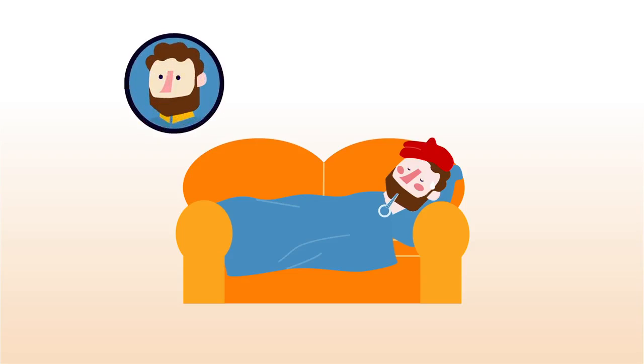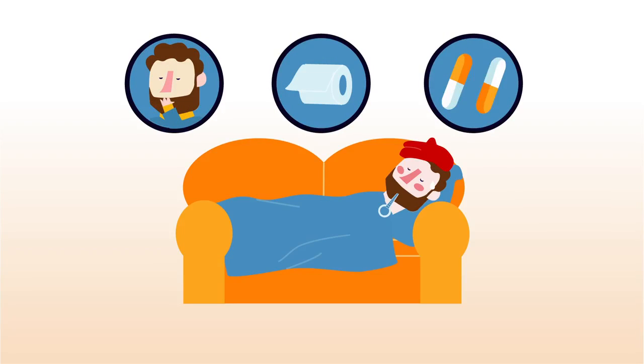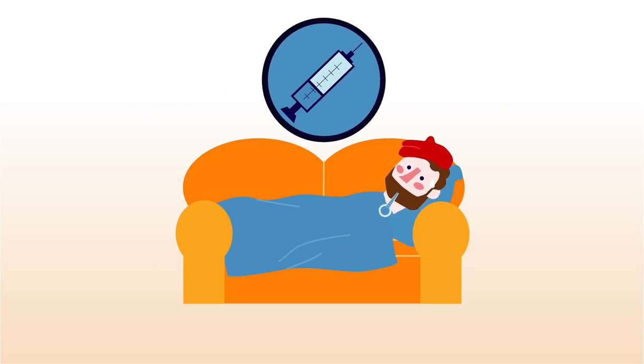You're really ill. You're vomiting, have watery diarrhea, and your body isn't absorbing the hydrocortisone tablets anymore. You need an emergency injection.